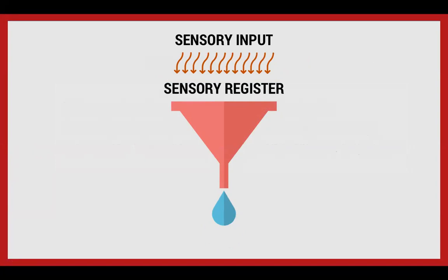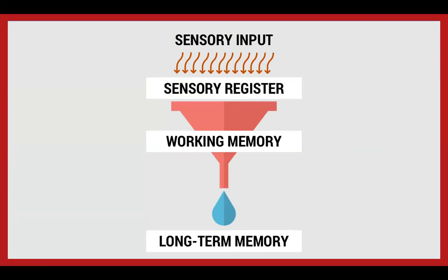As far as instructional design goes, it's good to know about three memory structures. The first is the sensory register or sensory memory, where sensory input comes in through your senses and gets registered for a very short time. Then information passes through working memory, where you manipulate information. And finally, on occasion, information gets encoded into long-term memory. The analogy of a funnel is useful here: so much information comes pouring into us, but only a small amount gets retained or encoded into long-term memory.